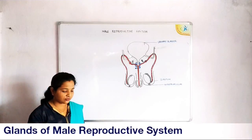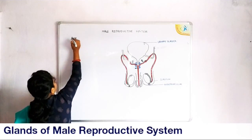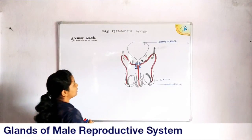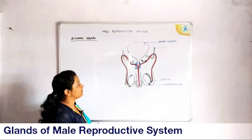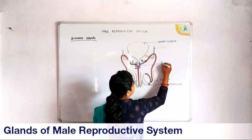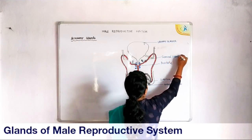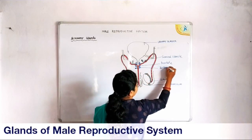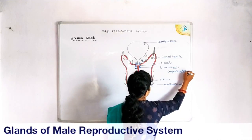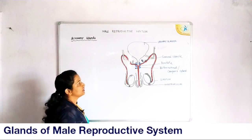In this class we are going to continue with the glands, or accessory glands, of the male reproductive system. We are going to study three glands: the prostate gland, the seminal vesicle, and the bulbo-urethral gland, also called Cowper's gland. First we will move to the seminal vesicle.